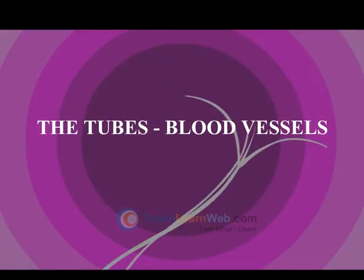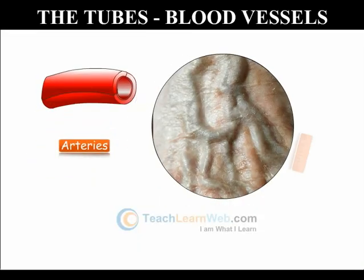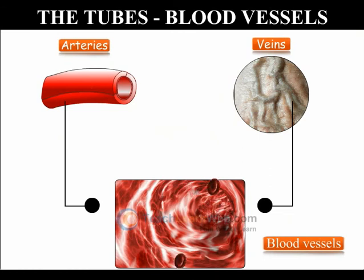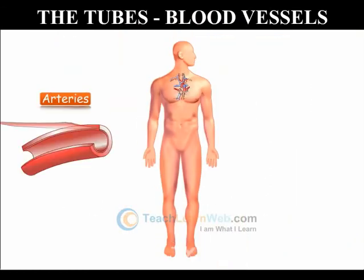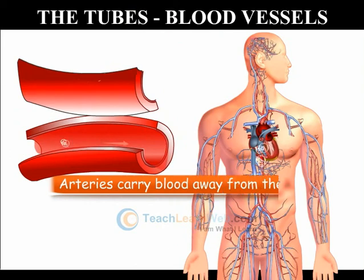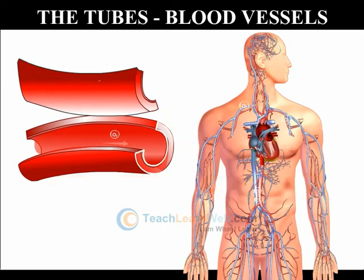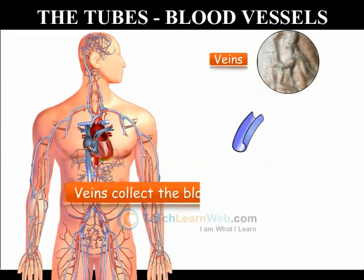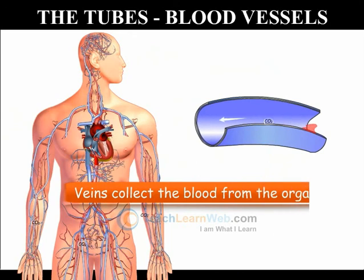Blood vessels include arteries and veins. Arteries are the vessels which carry blood away from the heart to various organs of the body. They have thick elastic walls. Veins collect blood from different organs and bring it back to the heart.